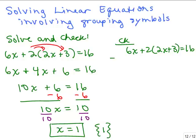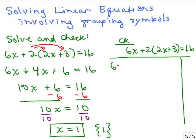Now we want to check our answer. What we want to do is plug in 1 everywhere for x and use the order of operations. So I have 6 times 1 plus 2 times the quantity 2 times 1 plus 3. We're not going to do the distributive property when we check — we're simply going to plug in the value for x. We're going to simplify inside parentheses; that's the order of operations.